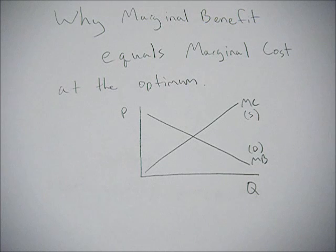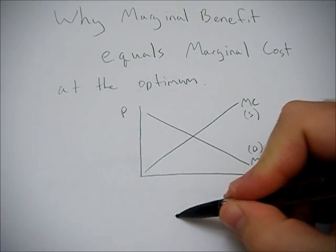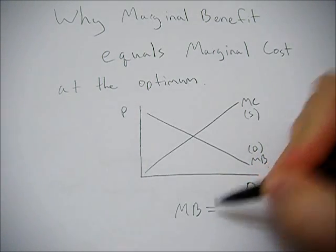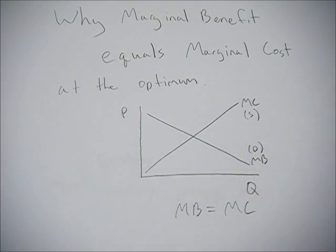Hi, this video is going to go over why marginal benefit equals marginal cost at the optimum in almost every economics problem. So you'll see this a lot. You'll get MB equals MC. We're going to talk about why that is in this video, what it means, and then give some examples using a consumer approach and then a firm approach.